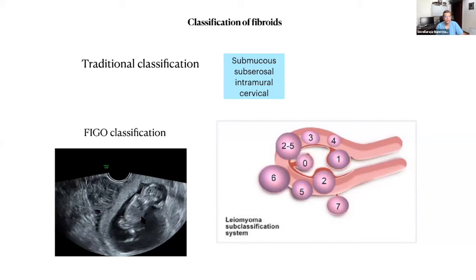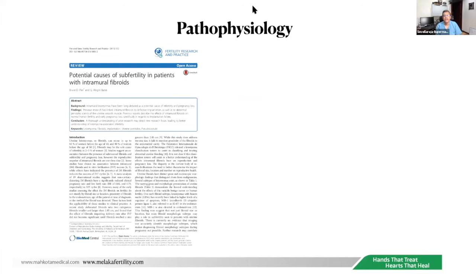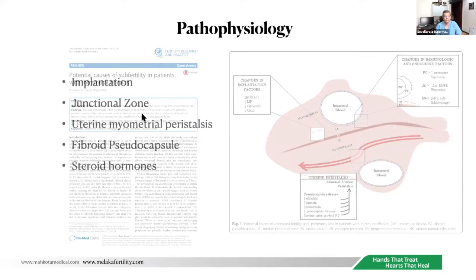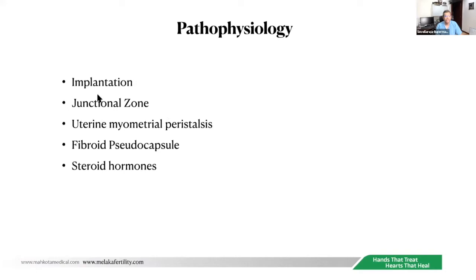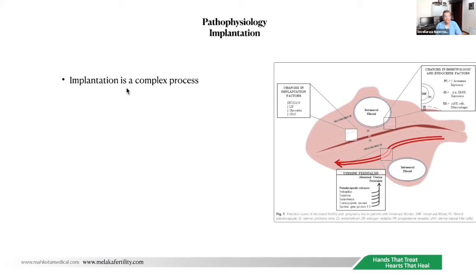Here you can see a patient with a subserous fibroid who is pregnant — we know subserous fibroids are not a problem, and we know submucous fibroids must be removed. Moving on to pathophysiology: I draw from a paper entitled 'Potential Causes of Subfertility in Patients with Intramural Fibroids.' There are five key factors to discuss: implantation, junctional zone, uterine myometrial peristalsis, fibroid pseudocapsule, and steroid hormones.